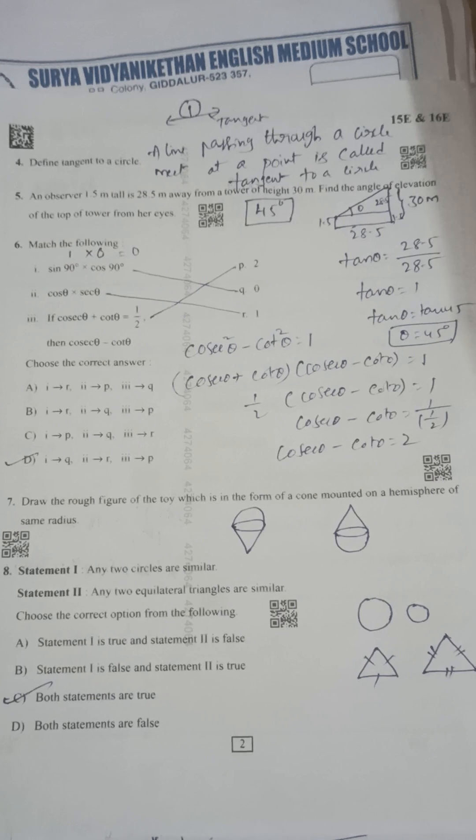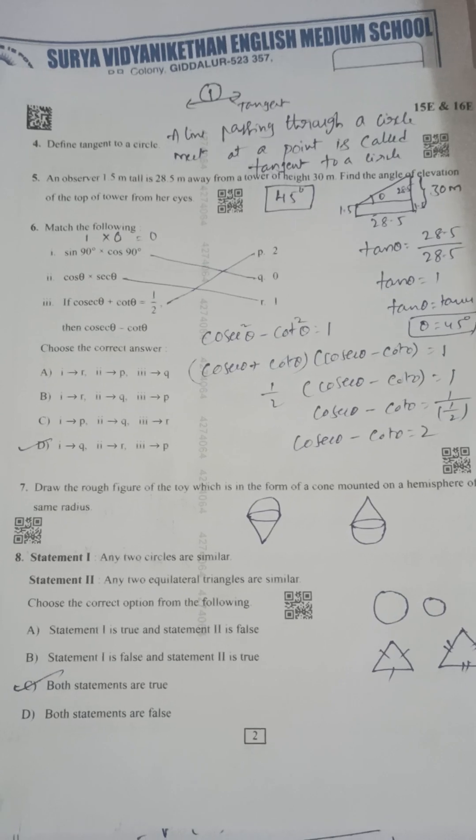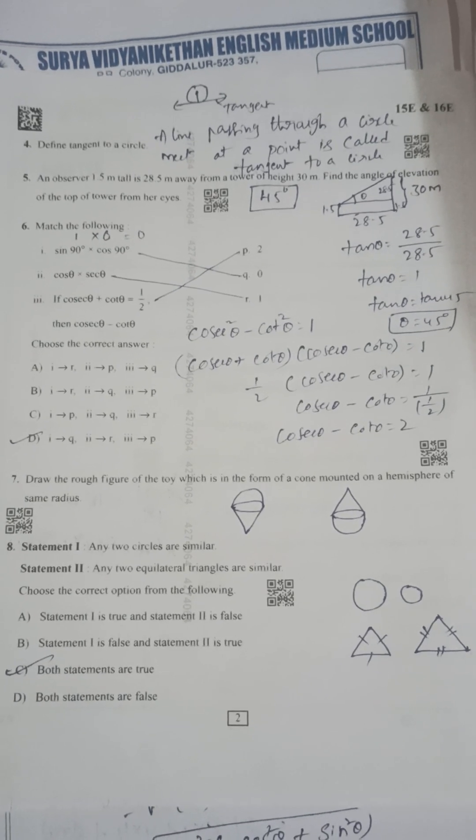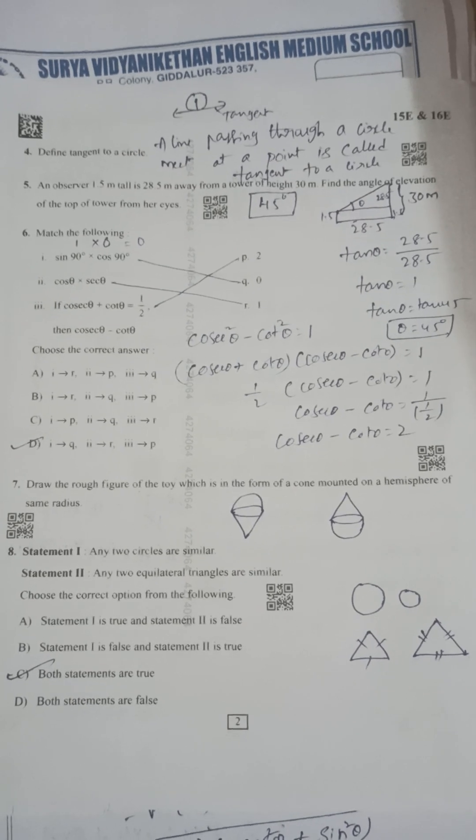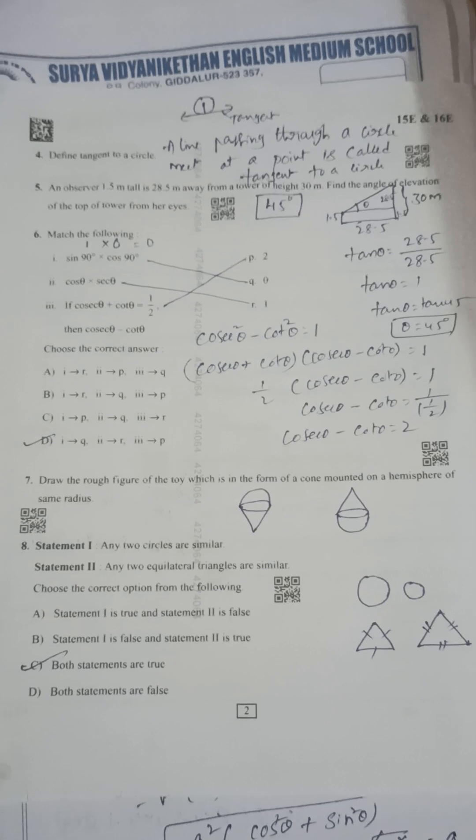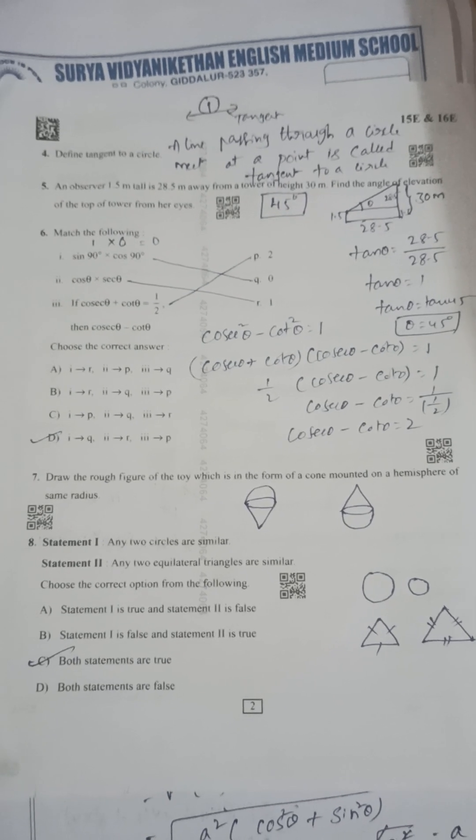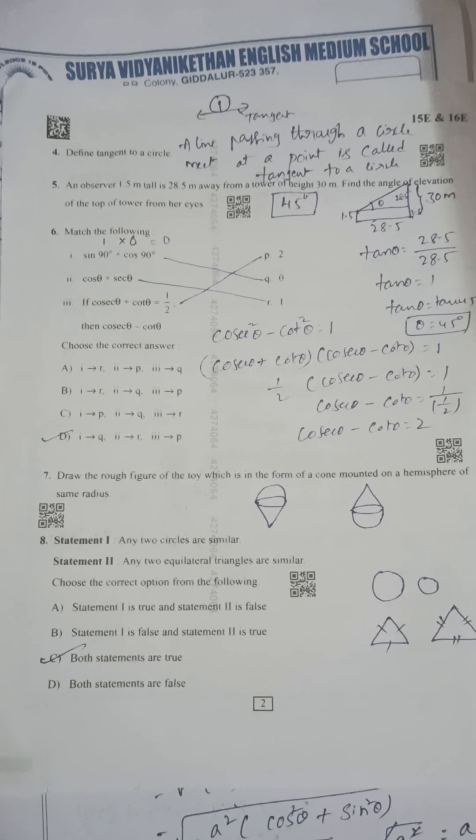Next, tangent to a circle: a line passing through a circle meeting at a point is called a tangent to a circle. Next, an observer 1.5 meter tall is 28.5 meter away from the foot of a tower of height 30 meter. Find angle of elevation theta, which equals 45 degrees.